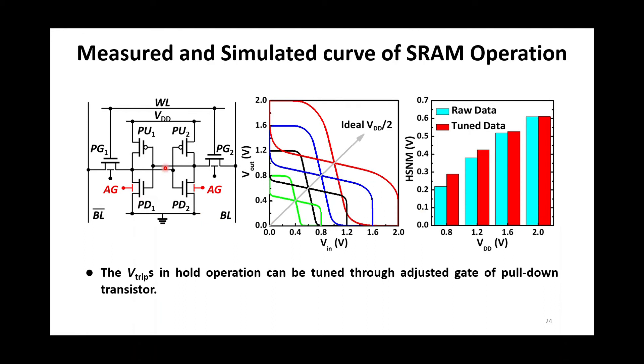After applying a specific adjusted gate voltage at different VDD, the trip voltage becomes fitting with the ideal half VDD. This figure summarizes the hold noise margin of measured data and tuned data. The hold noise margin are improved at all supply voltage, especially at low VDD.